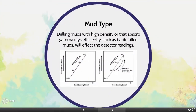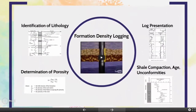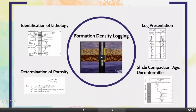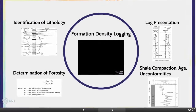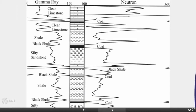Mud type also matters — drilling muds with high density or those that absorb gamma rays efficiently, such as barite-filled muds, will affect the detector readings. The density log is not a good tool for identifying most lithologies because most rocks have a wide range of densities resulting from their varied mineralogical compositions and variable porosities.